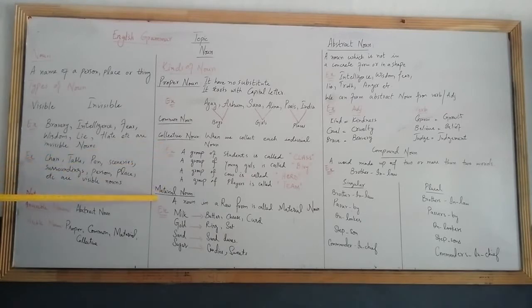Fourth one is material noun. A noun in raw form is called material noun. A noun which is still in its raw form, not refined, not in a concrete shape. For example: milk, gold, sand, sugar. These are all raw materials. When we make butter, cheese, or curd from milk, it changes form. But when it is in milk form or unrefined form, it is material noun. Similarly, gold in its natural form is material noun.